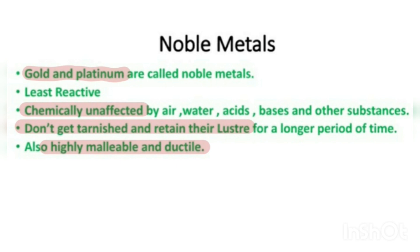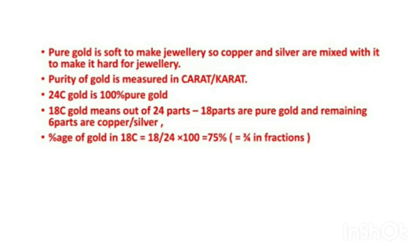Due to all these reasons, noble metals are used in making jewelry. When we talk about pure gold, it is undoubtedly a noble metal — least reactive, chemically unaffected, and highly malleable and ductile. However, pure gold is not fit for making jewelry because it is too soft. To make it appropriately hard, copper and silver are mixed with pure gold.